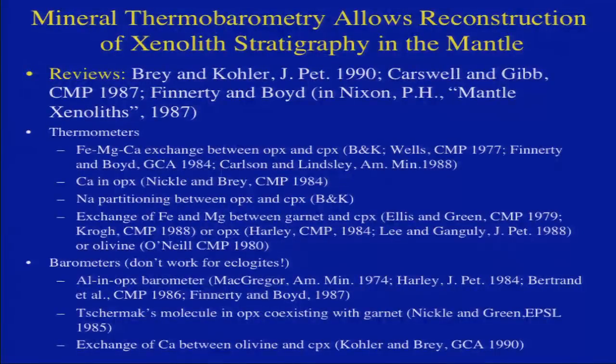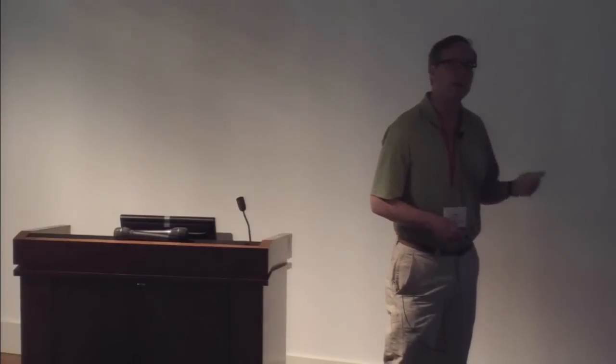Using mineral thermobarometry, you can reconstruct the stratigraphic column sampled by the kimberlite. The mineral composition — iron-magnesium exchange, calcium in orthopyroxene — equilibrates at the temperature and pressure of the rock's position in the mantle. When the kimberlite rips the sample off and brings it to the surface in hours or days, that equilibrium is frozen in. So when you do mineral thermobarometry on a xenolith, you're recording conditions just before the kimberlite picked it up — these are fossil geotherms sampled at the time of eruption.